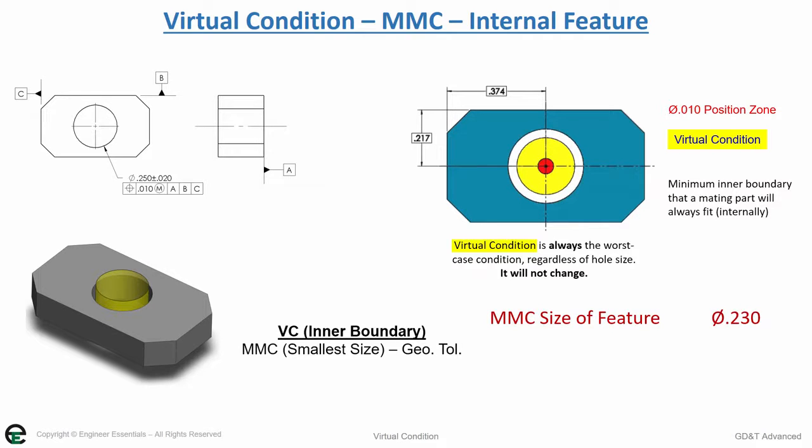In this case, it's the MMC size .230 minus .010, which gives you a virtual condition of .220, the theoretical boundary that your hole can never cross into to ensure proper assembly.